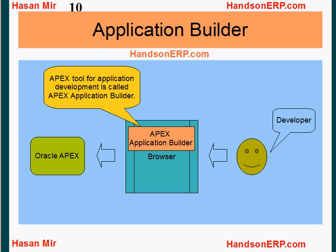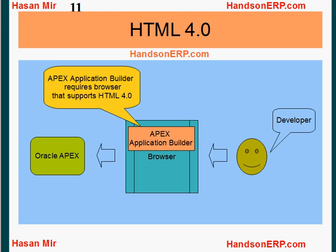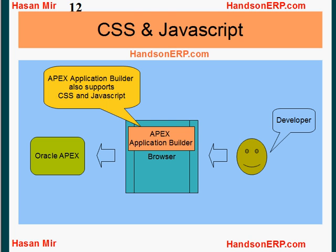APEX comes with an application development tool called APEX Application Builder. APEX Application Builder requires a browser that supports HTML 4.0 and above. APEX Application Builder also supports cascading style sheets, known as CSS. CSS is a style sheet language used to describe the look and formatting of a page.